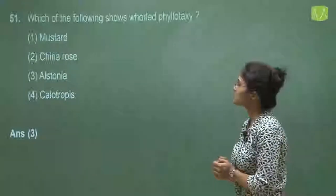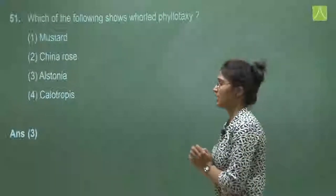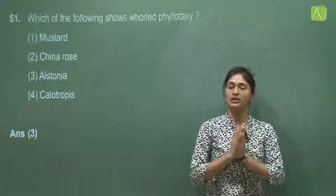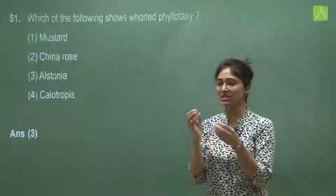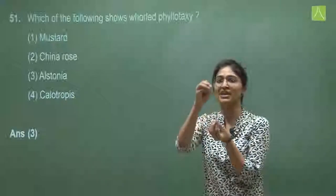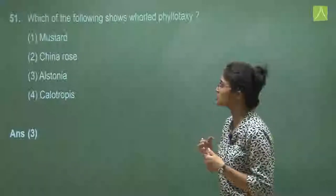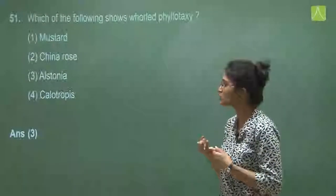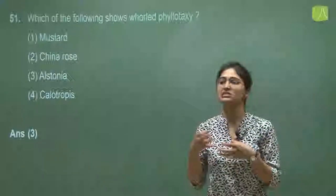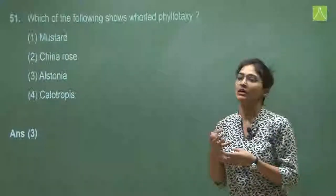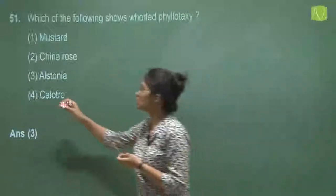Question 51 asks which plant shows whorled phyllotaxy. Phyllotaxy is the arrangement of leaves, and whorled means many leaves arise from a single point. The options are mustard, China rose, Alstonia, and Calotropis. NCERT clearly mentions Alstonia, which can also be seen used for decoration purposes. So the answer is Alstonia.